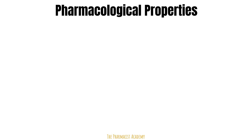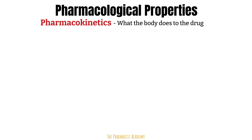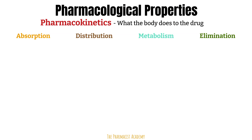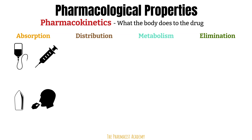Each drug has its own pharmacokinetic and pharmacodynamic parameters; I will focus on pharmacokinetics — what the body does to the drug. After the drug enters the body, it is absorbed, distributed into tissues, metabolized, and then eliminated. Benzos can be administered IV, IM, rectal, or oral. IV formulations have 100% absorption, and there is also good absorption with other routes. Diazepam, lorazepam, and midazolam come in IV and intramuscular formulations. Diazepam is the only one that also comes as a suppository.